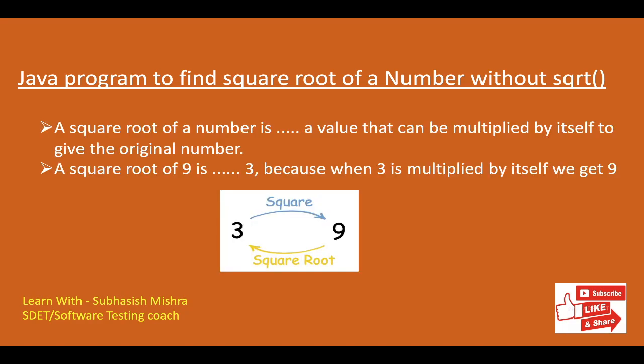A square root of a number is a value that can be multiplied by itself to give the original number. The square root of 9 is 3 because when 3 is multiplied by itself we get 9 — so 3 times 3 equals 9, meaning 3 squared is 9 and 9's square root is 3. Similarly, 4 squared is 16 because 4 times 4 equals 16, so 16's square root is 4.